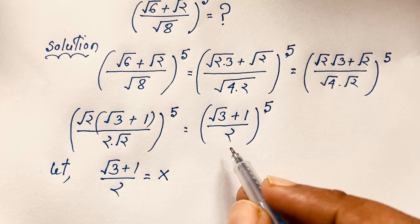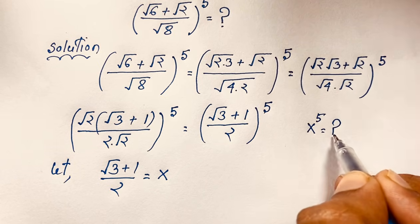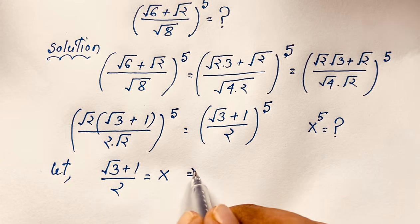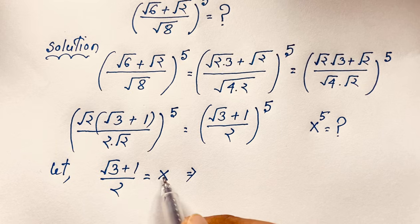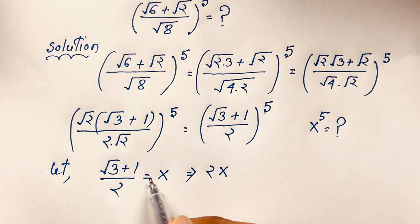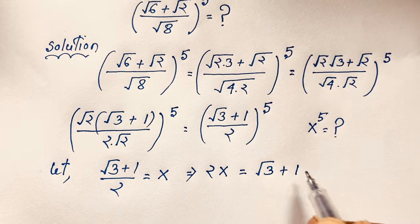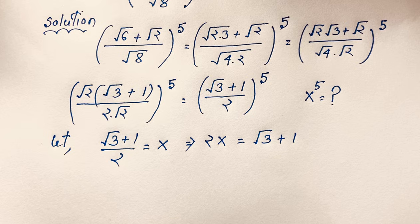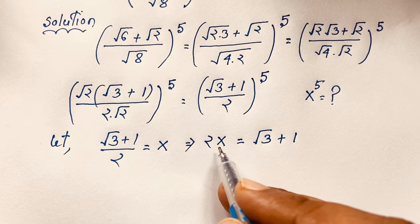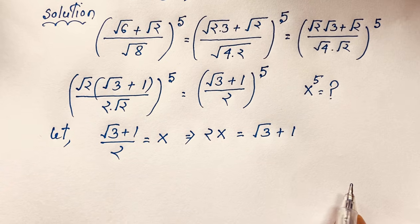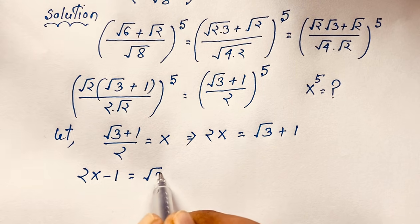Now, multiplying: 2 times x equals square root 3 plus 1. Moving the 1 to the other side: 2x minus 1 equals square root 3.